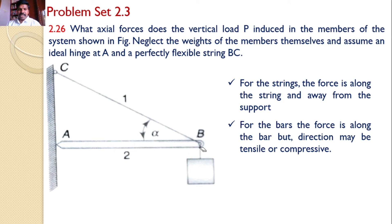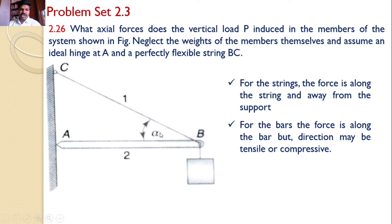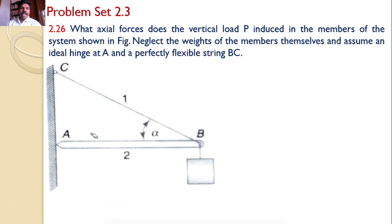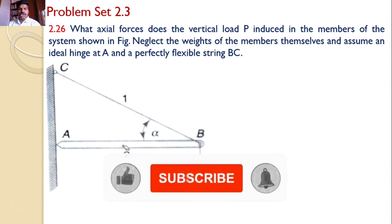Similarly, if there is any bar in the system, the force is also along the bar. First, let us assume that this bar is in tension. That means if you look from point B, the force is away from point B. If you get a positive answer at the end, our initial assumption is correct. But if you get a negative answer, that means the direction we assumed initially is wrong and we need to change the direction. With these concepts, let us go to the solution of this problem.